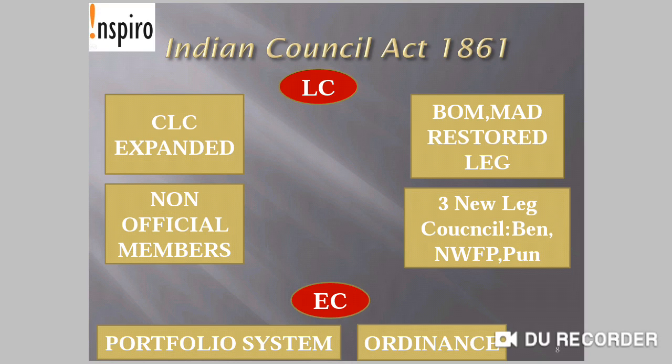Indian Council Act 1861. The Central Legislative Council was expanded and non-official members were now allowed. In 1862, the then Viceroy Lord Canning nominated three Indians to this Legislative Council: the Raja of Banaras, Maharaja of Patiala, and Sir Dinkar Rao.